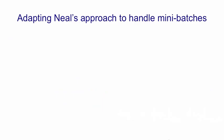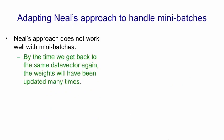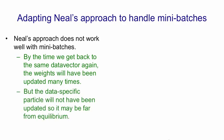However, it's difficult to apply this approach to mini-batches. The reason is that by the time we get back to the same data vector, if we're using mini-batch learning, the weights will have been updated many times. So the stored data-specific particle for that data vector won't be anywhere near thermal equilibrium anymore — the hidden units won't be in thermal equilibrium with the visible units of the particle given the new weights. And again, we don't know how long we're going to have to run before we get close to equilibrium again.